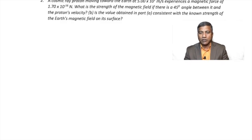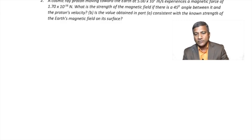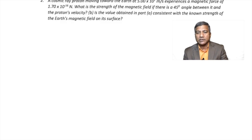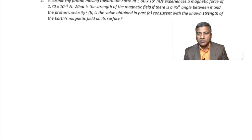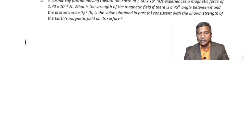Question 2: A cosmic ray proton moving toward the Earth at 5.00 × 10⁷ m/s experiences a magnetic force of 1.70 × 10⁻¹⁶ newtons. The velocity and force are given and we are asked to find the strength of the magnetic field, given a 45-degree angle between the field and the proton's velocity.